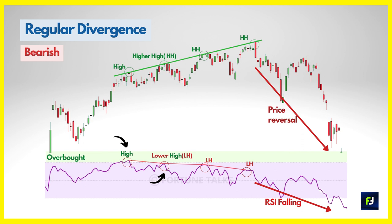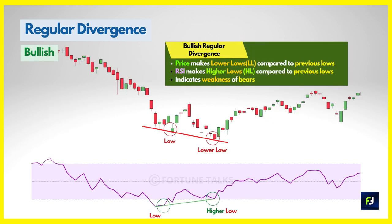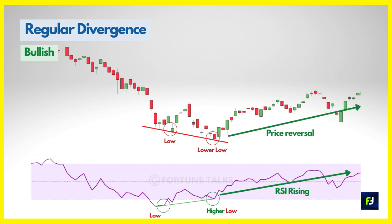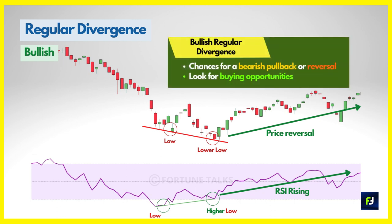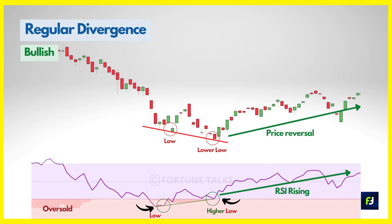A regular bullish divergence occurs when price makes new lower swing lows but RSI is forming new higher swing highs — indicating the bears are weakening and bulls might be gaining traction, with chances for a price correction upside. The divergence signal is stronger if the first RSI low was formed at the oversold region and the second swing gets formed above the oversold region, depending upon your RSI range settings.